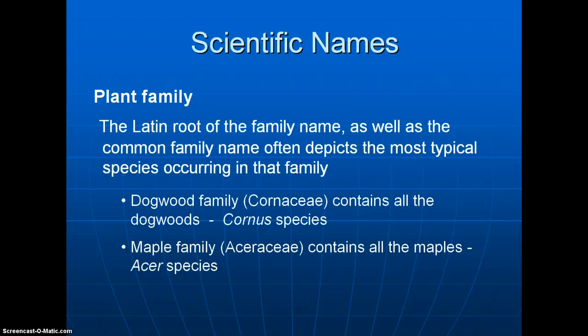Now let's take a look at scientific names. The Latin root of the family name will often depict the most common species occurring in that family, so you can start to see patterns. For example, the dogwood family contains the dogwoods — the scientific name of the family is Cornaceae, and it contains Cornus species. Same with the maple family: it's the Aceraceae, and it contains the Acer species, which are the maples.